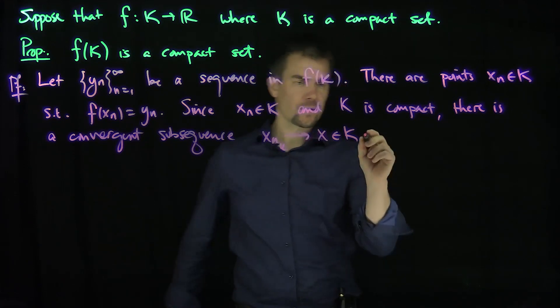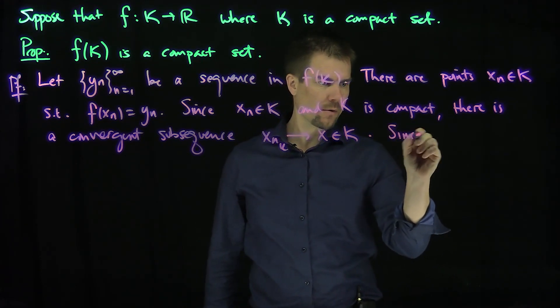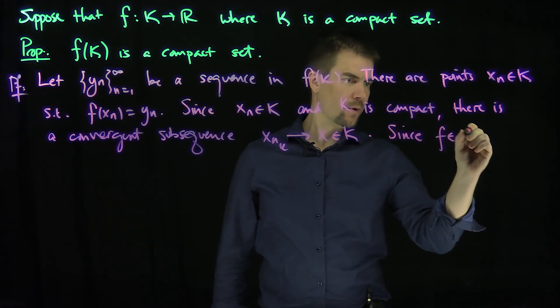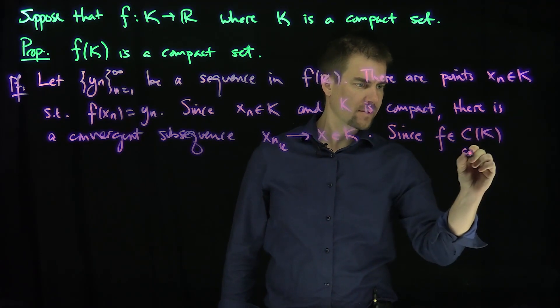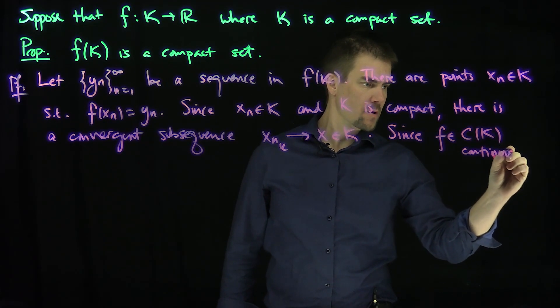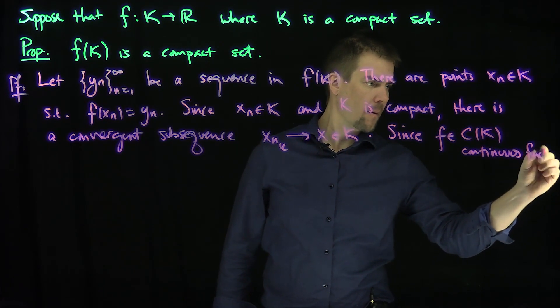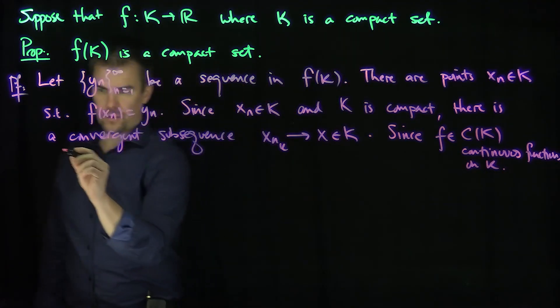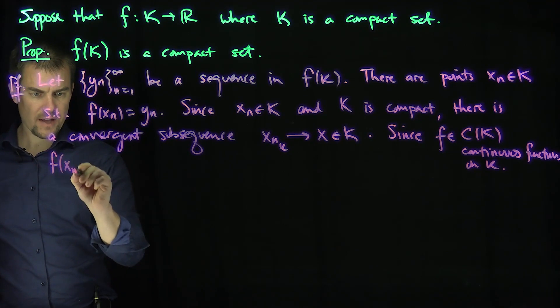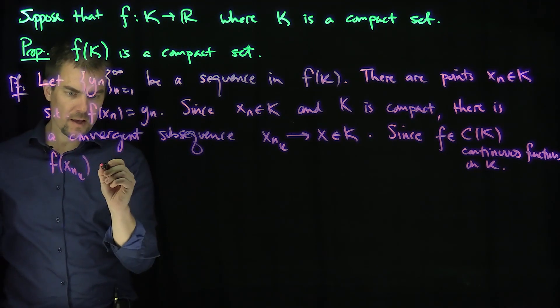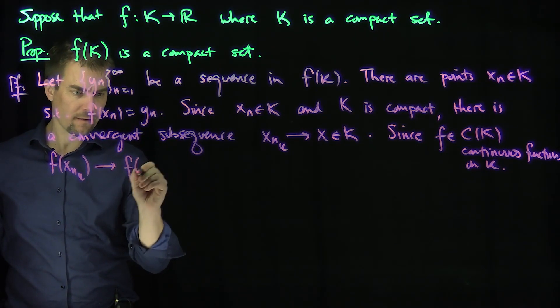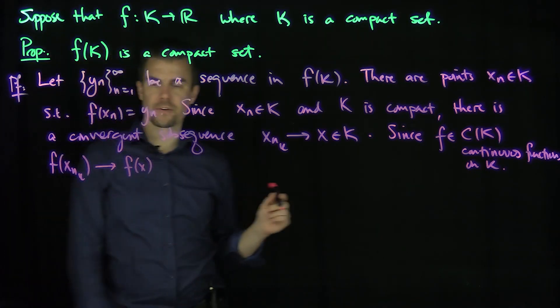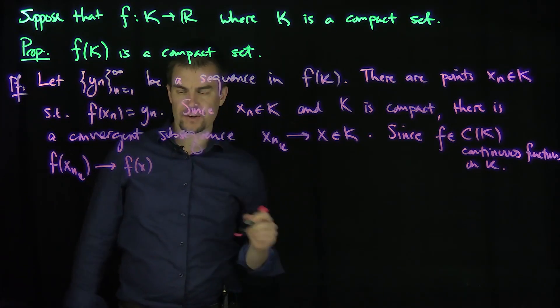Now, I know that the function f is continuous. Since f is continuous on K, we know that f of x_n_k is going to converge to f of x as k goes to infinity. This value x is in K.